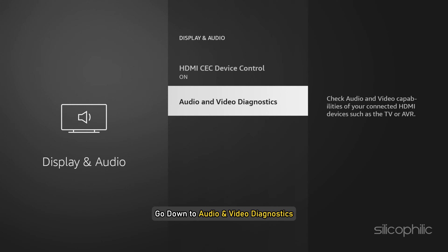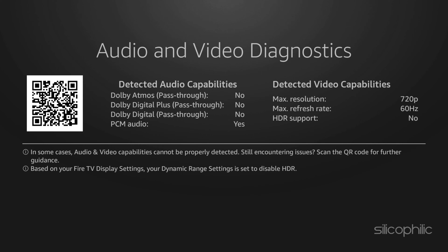Go down to Audio and Video Diagnostics. Here you can see the audio and video capabilities. If you have HDR support on your TV, then you can get Deep Reach Color. But if your TV doesn't support that, the color will not give that rich effect.